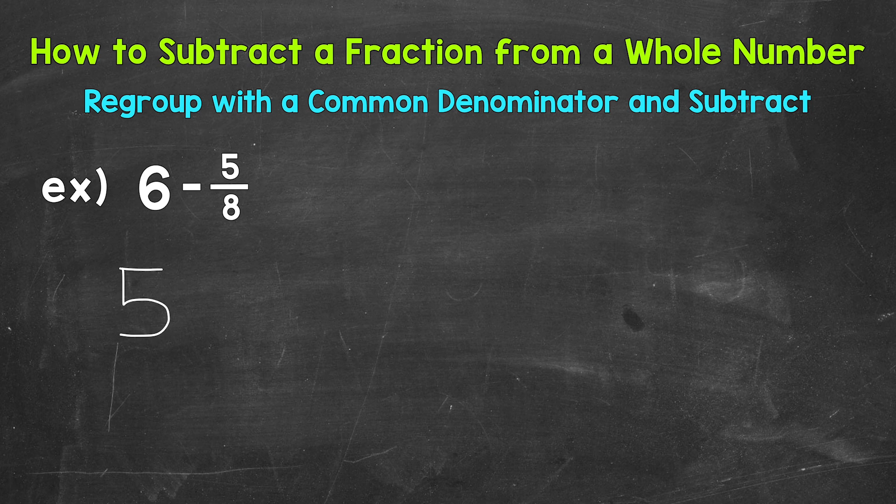Now take a look at 5 eighths. We have a denominator of 8. So let's keep a common denominator in mind when creating this mixed number. So let's use 5 and 8 eighths. I used 8 eighths because of this denominator here. It gives us a common denominator.